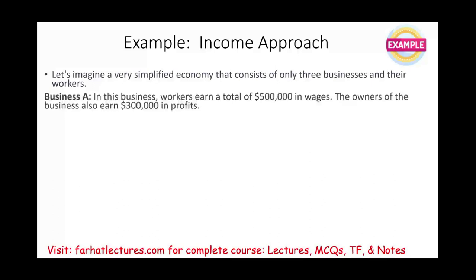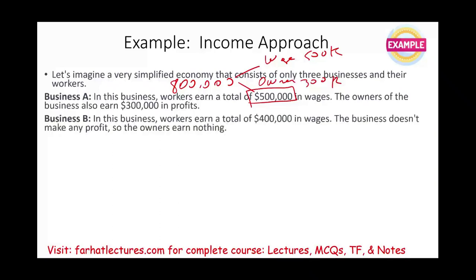In Business A, workers earned $500,000 in wages and the owners earned $300,000 in profit, so the business total is $800,000. In Business B, workers earned $400,000 in wages and the business made no profit — all the revenue went to wages, so the owners earned nothing. Therefore the total for Business B is $400,000 in wages income.